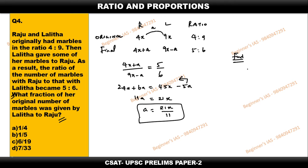She had 9x originally. Therefore, they are asking you to find a/9x, which is nothing but: we found a = 21x/11, so (21x/11) divided by 9x, which is 21x/11 times 1/9x.